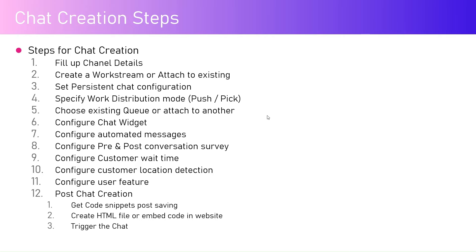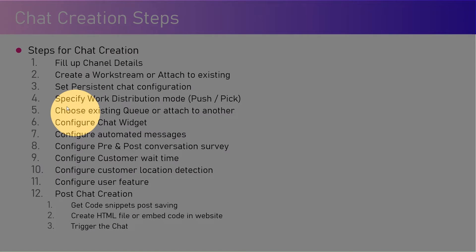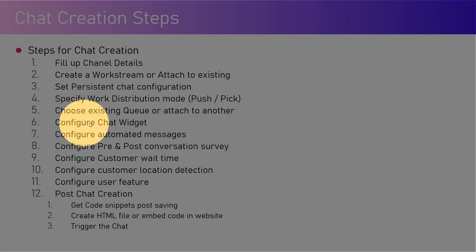Then you can set the persistent chat configuration parameters and specify the work distribution mode — what happens when an input is received, whether it's a push-based model or a pick-based model. You also need to choose an existing queue or attach to an existing queue, because all channels should route through some sort of a queue. Then configure the chat widget — how the chat widget should look.